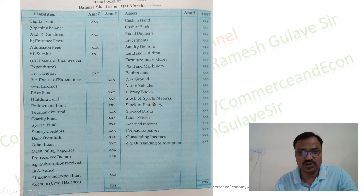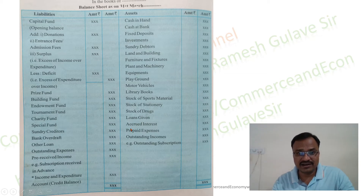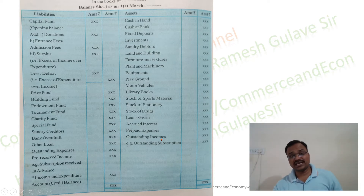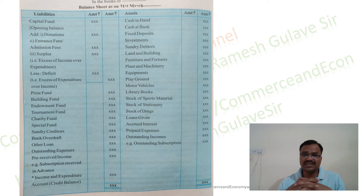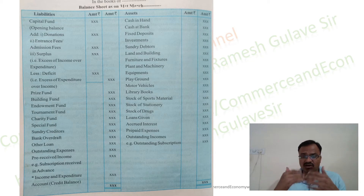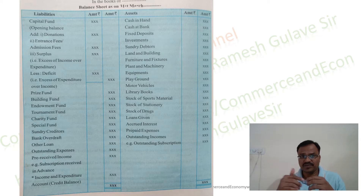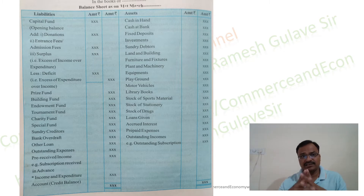Additional asset-side items include loans given, accrued interest, prepaid expenses, and outstanding incomes such as outstanding subscriptions. Friends, you have to keep in mind the nature of incomes and receipts of not-for-profit concerns and the nature of their expenditures so that you can correctly classify items as income, expenditure, asset, or liability.